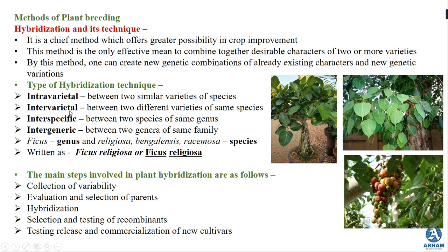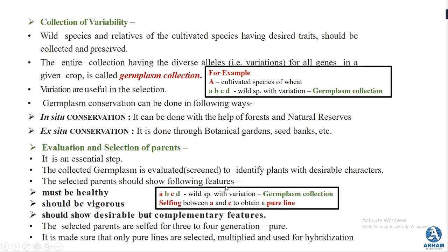The four types of hybridization are intravarietal, intervarietal, interspecific, and intergeneric. Then we studied the main steps involved in plant hybridization. There are five steps. The first step is collection of variability, where we collect the species and relative species of already cultivated species. This collection is known as germplasm collection, and it can be done by in-situ or ex-situ conservation.